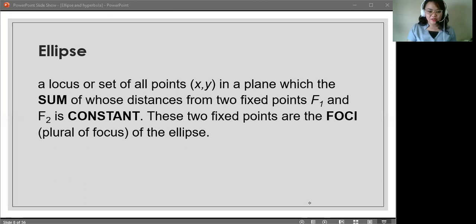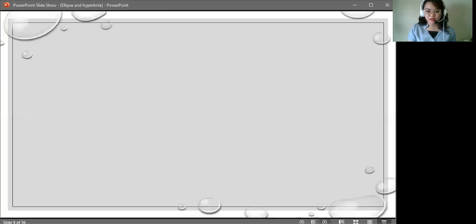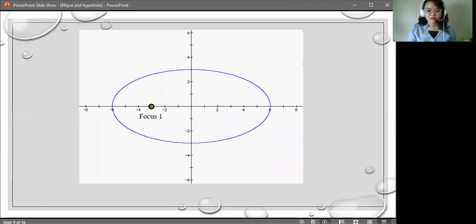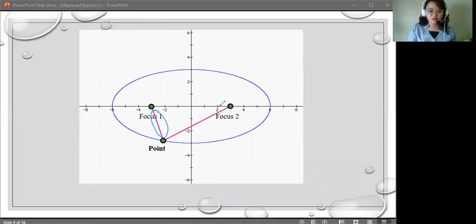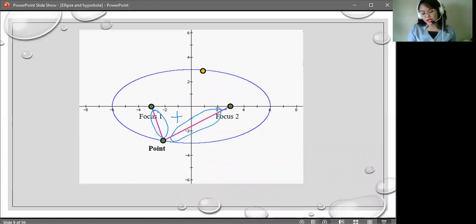Next. Now that you know the definition, these are now the parts of an ellipse. We have focus 1 and focus 2 or F1, F2. If you have a point anywhere on an ellipse, and then get the distance from focus 1 and focus 2, if you would add the two distances, this measurement and this measurement, they are just equal to... So you have another point anywhere on the ellipse again, and get the distances, you would just have equal measurements.